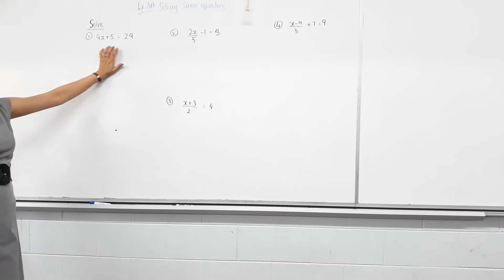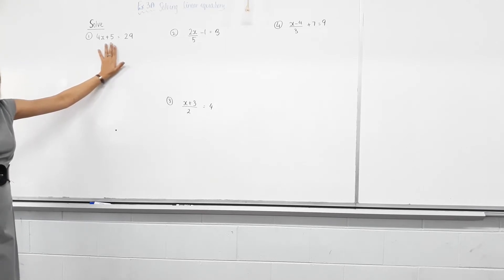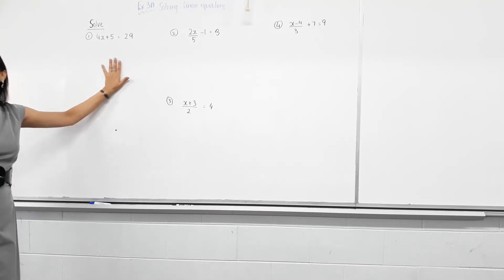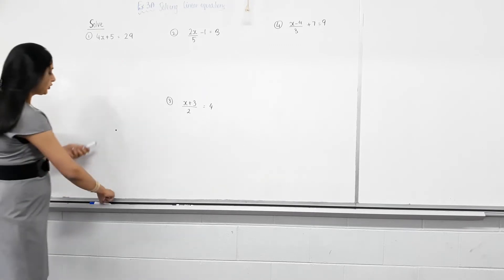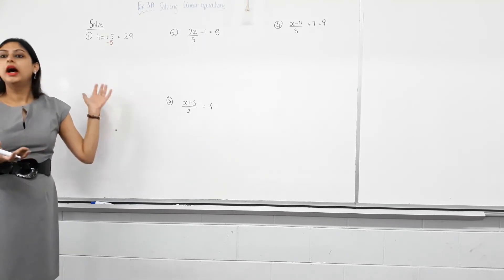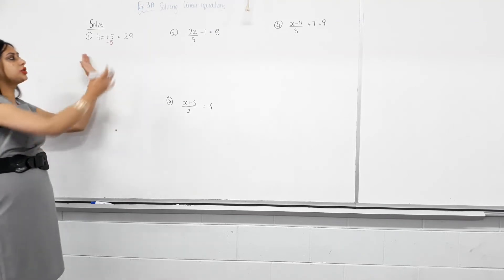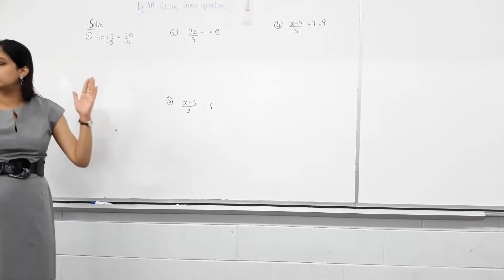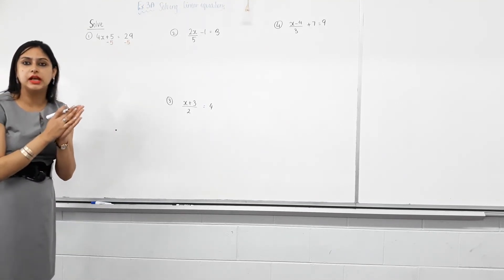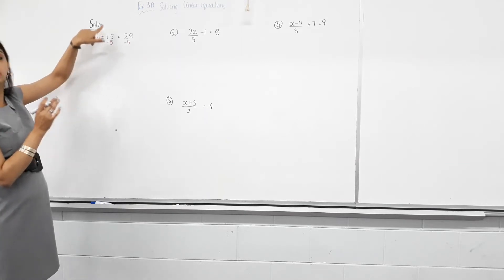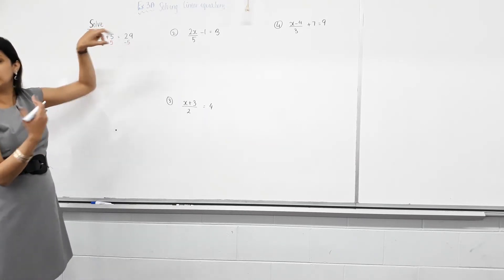So we need to get rid of the 5 here first. This 5 has been added to the 4X term. What has been done? Added. What's the inverse operation of adding? What's the opposite of adding 5? Subtract 5. So if I take away 5 from this side, 5 take away 5 is 0 — don't you get rid of 5? However, you can't just do that to one side of an equation. These two sides are equal, so if you take away 5 from this side, you take away 5 from the other side as well. So whatever you do to the left hand side, you must do to the right hand side.